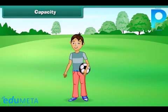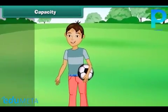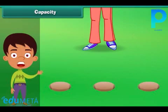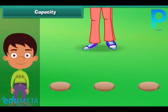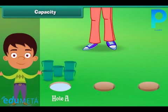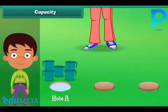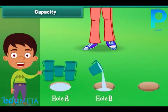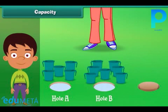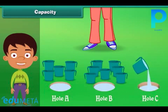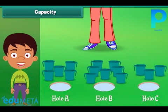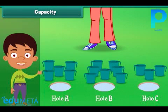Rama was playing in the garden and saw three holes in the playground. He decided to fill them with water. Hole A gets filled with five mugs of water, hole B gets filled with seven mugs of water, and hole C gets filled with three mugs of water. Can you tell which is the biggest hole? Yes, hole B is the biggest hole.